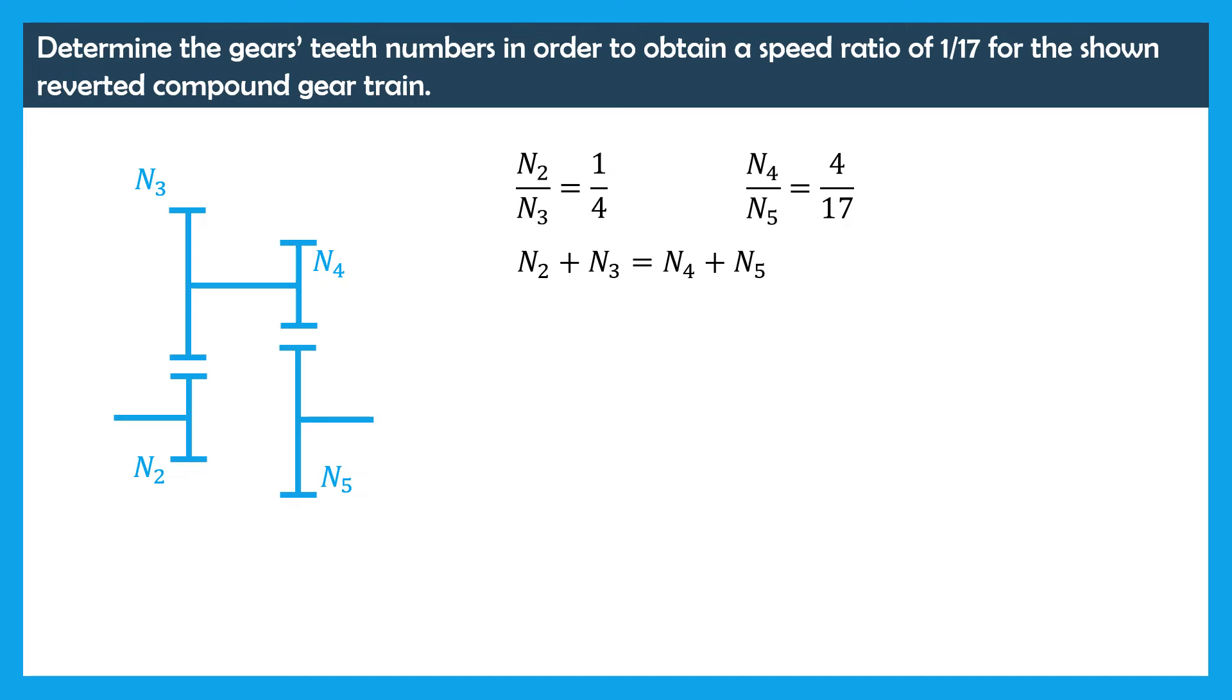From the first equation, we have N2 over N3 is equal to 1 over 4, thus N3 is equal to 4N2.